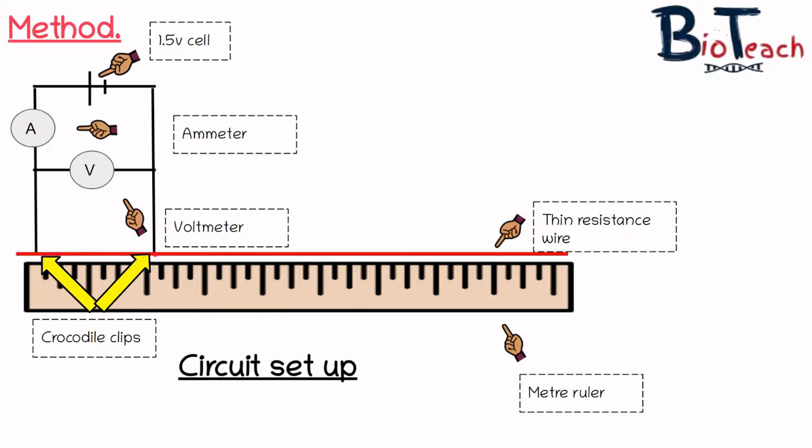If the next section I want to measure is 15, I would simply undo this crocodile clip over here and move it along till it says 15, and then that would be that entire length of wire that's been measured. Remember, at the end of the day all of this is not a solid component. We draw them as straight lines, but these are all just wires, so it's really important to be able to picture that.